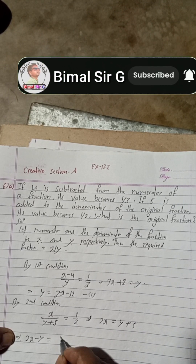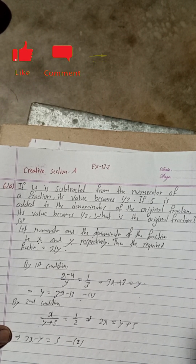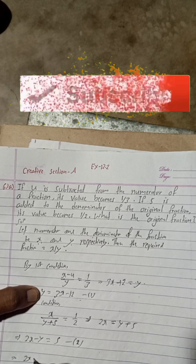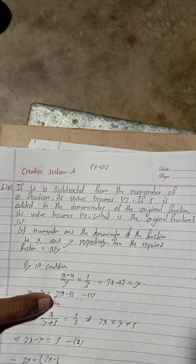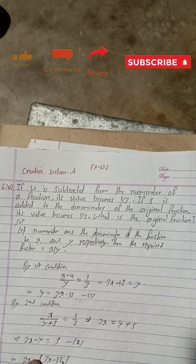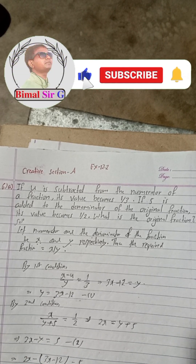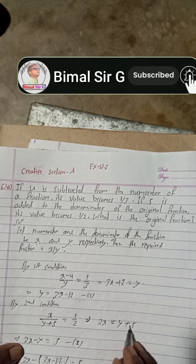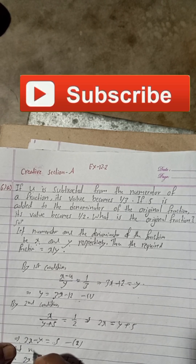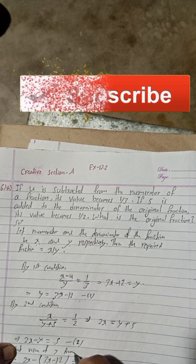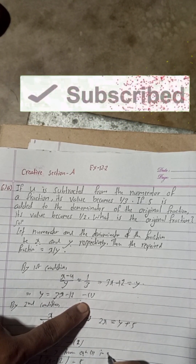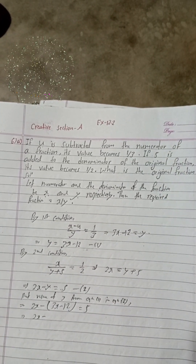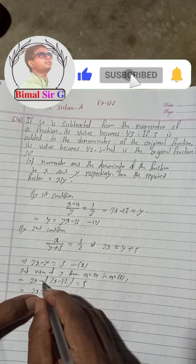Now substituting the value of y from Equation 1 into Equation 2: 2x − (3x − 12) = 5. Please don't forget to keep the bracket because of the minus sign. Putting the value of y from Equation 1 into Equation 2.